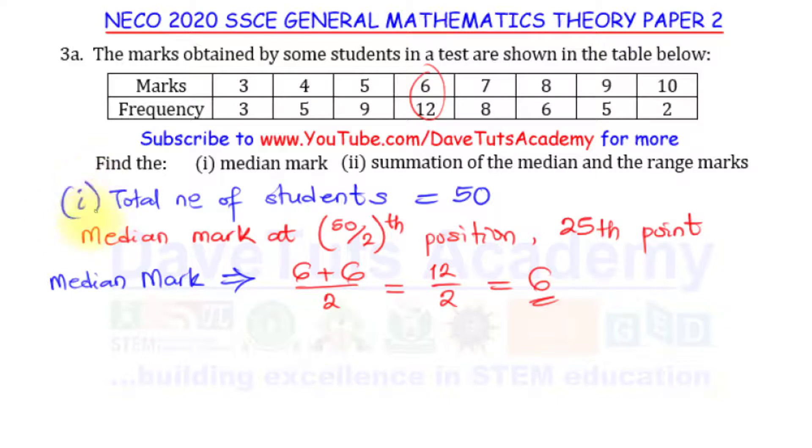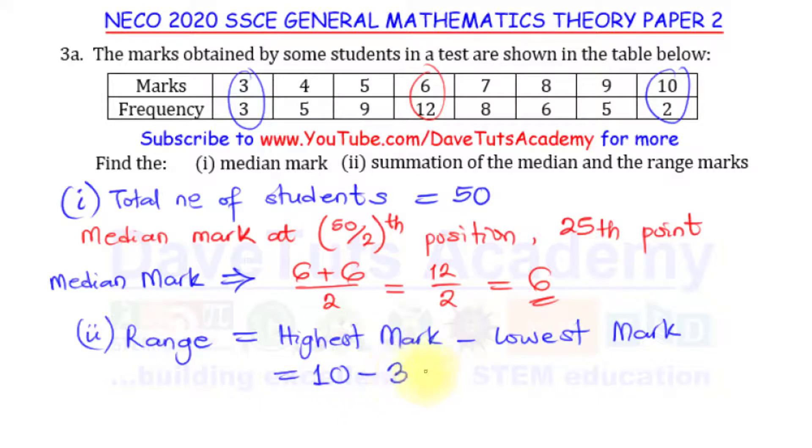In the second case, we're asked to find the summation of the median and the range, but first we need to evaluate the range. What is the range? The range is the difference between the highest occurring mark and the lowest occurring mark. Here we have 10 as the highest mark and 3 as the lowest mark, so the range is 10 - 3 = 7.